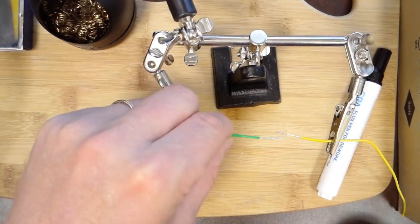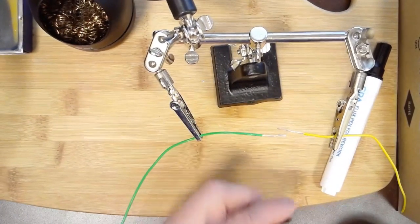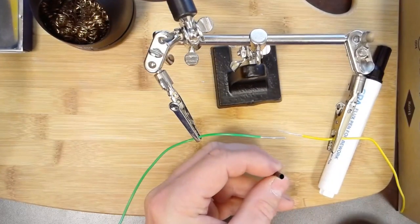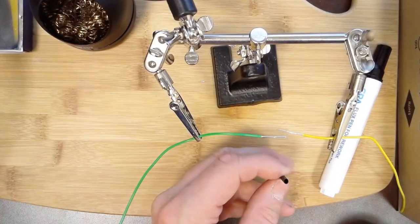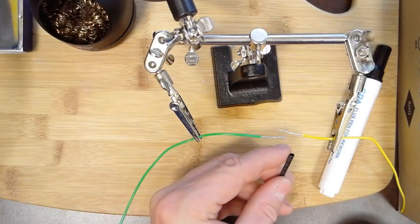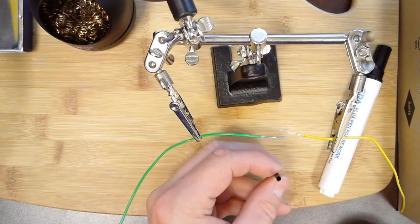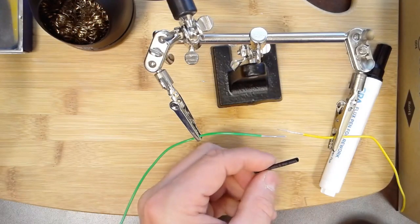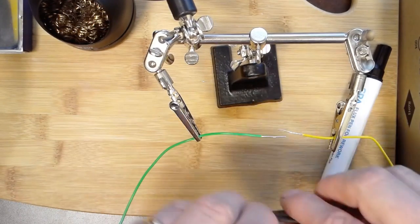I have this little piece of shrink tubing. You can buy this at Harbor Freight, electronic stores, or some box stores. You want this shrink wrap tubing. You can use electrical tape, but I prefer this stuff.